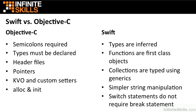In Swift, functions are first-class objects. This is a major switch from Objective-C, and it gives us the power of other languages such as JavaScript, where functions are first-class objects and can be returned from other functions.